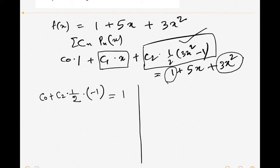On the right hand side, the coefficient of x² is 3. This must be equal to the coefficient of x² from the left, which is c₂·½·3. This gives us c₂ equal to 2.